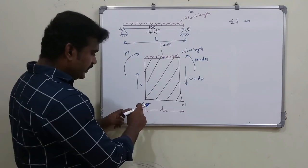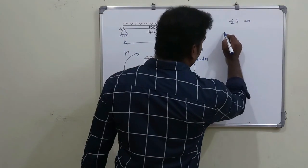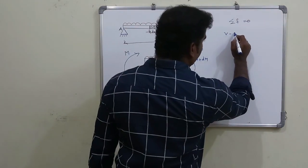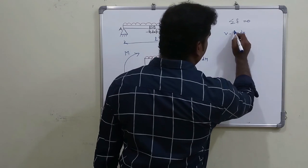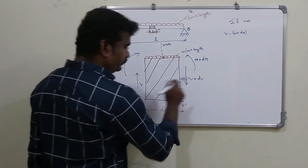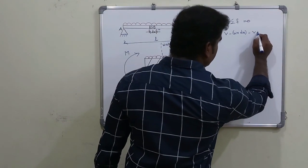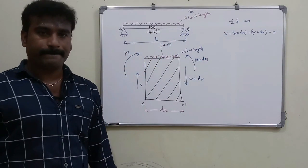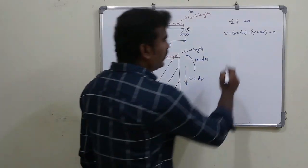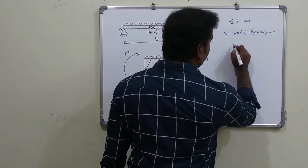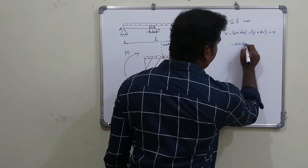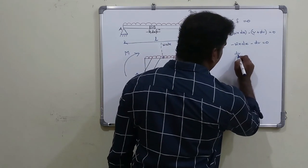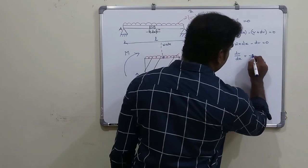What forces are there? We have V upward, minus W into dx downward, minus (V plus dV) upward — equal to zero. V and V cancel, leaving minus W·dx minus dV equals zero. If we simplify, dV by dx equals minus W.